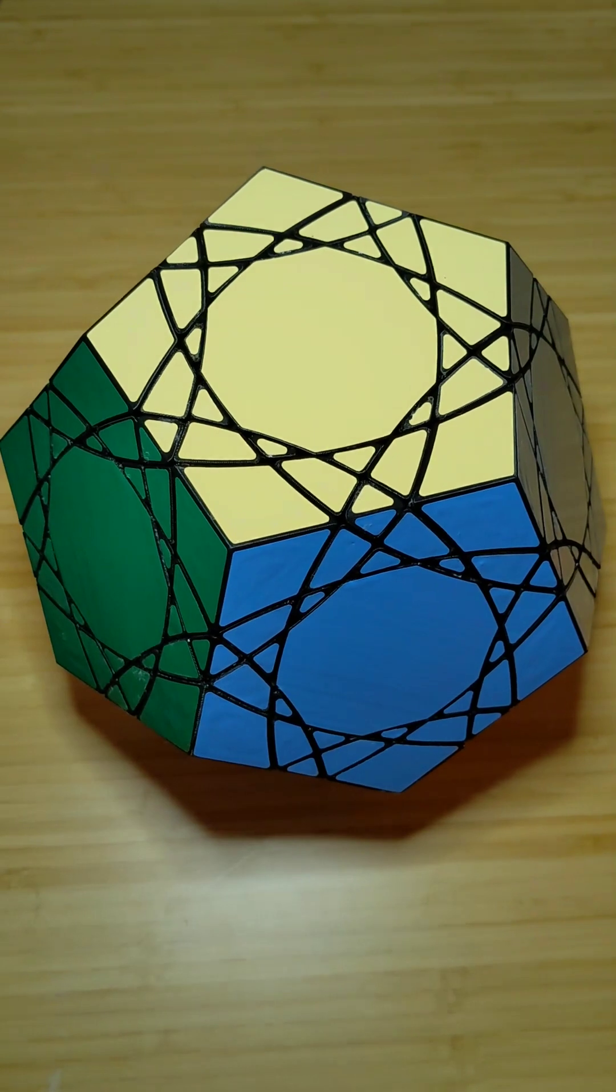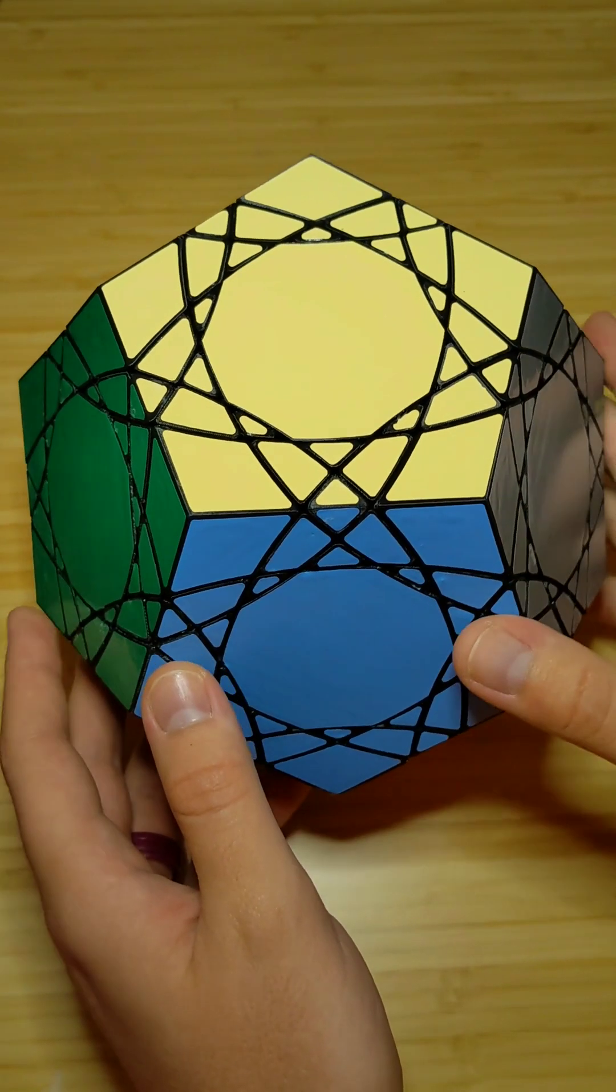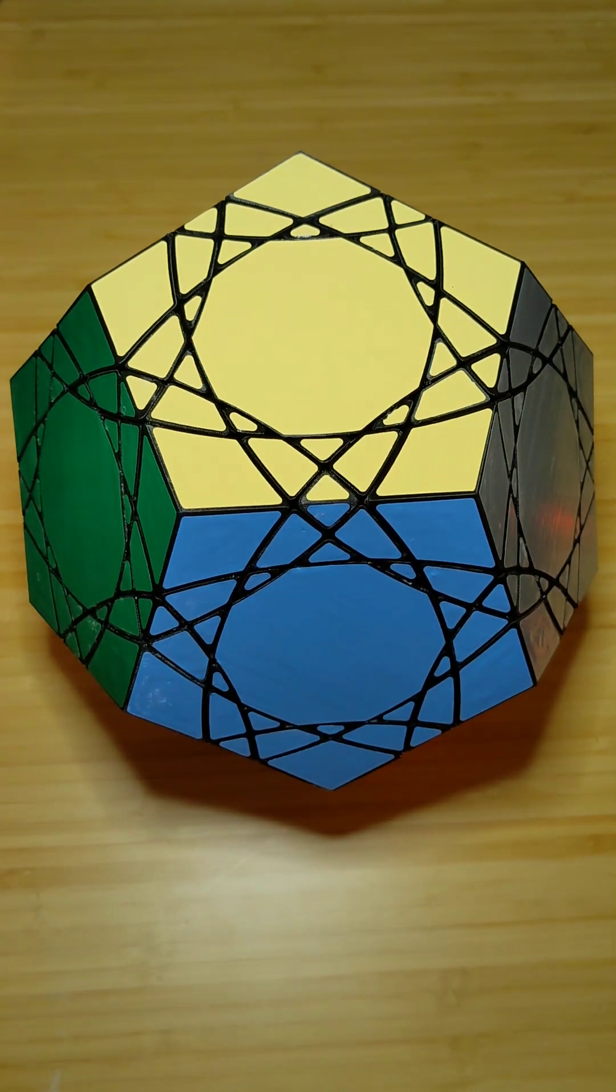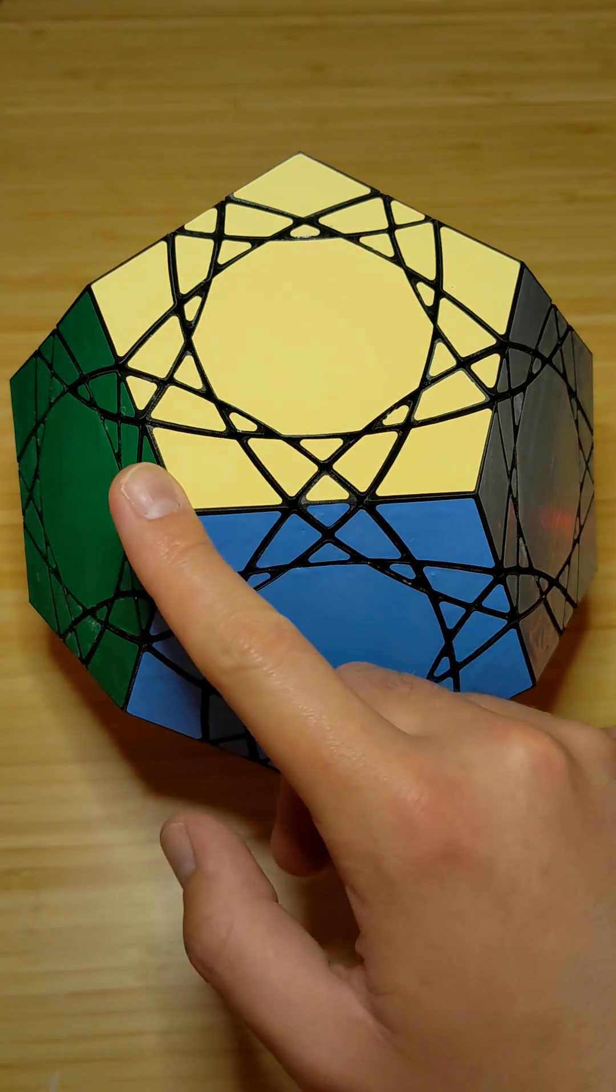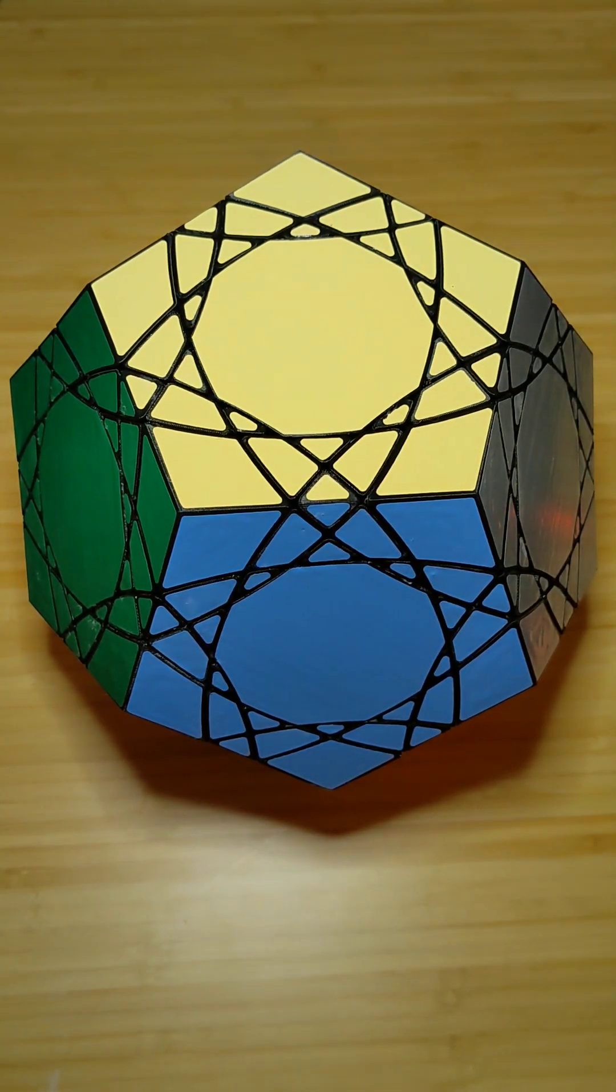So, what's all this about the Radiolarian series? The Radiolarians were a bunch of face-turning icosahedra done by Jason Smith a few years ago. They cover nearly all the possible cut depths for face-turning icosahedrons. And they're numbered 1 through 15. Corner-turning dodecahedra are equivalent to face-turning icosahedra. This is the corner-turning dodecahedron equivalent of the Radiolarian 6.